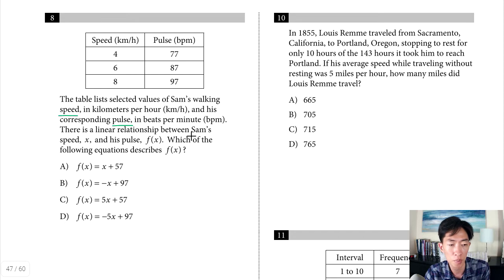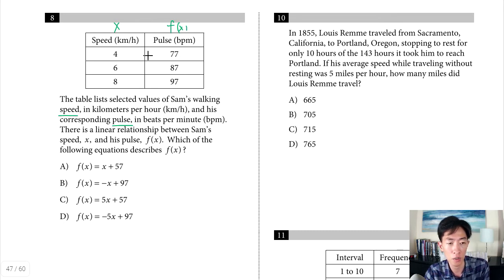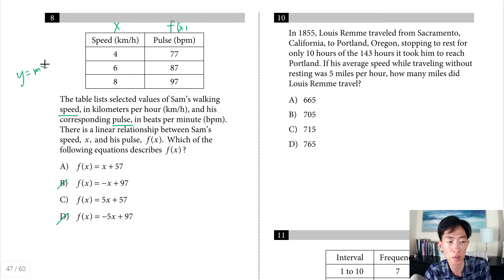Question 8: a table lists Sam's walking speed in km/h and pulse in beats per minute; there's a linear relationship. Speed is x and pulse is f(x). All answer choices are lines, and since pulse increases as speed increases, the slope is positive. We can eliminate choices B and D for having negative slopes. Choices A and C share the same y-intercept of 57, so we need to determine if the slope is 1 or 5.